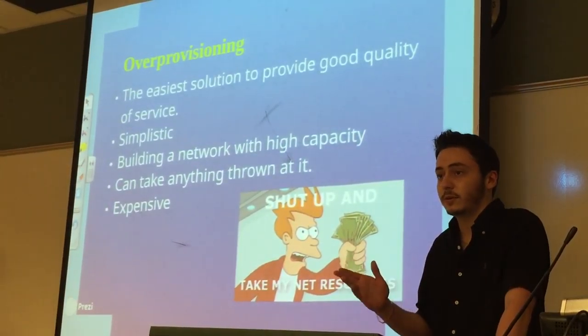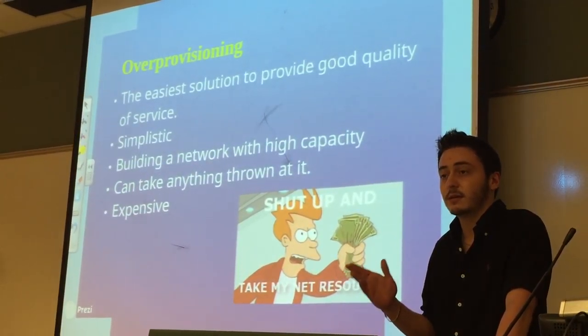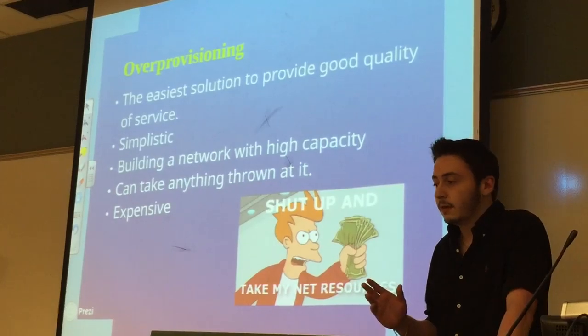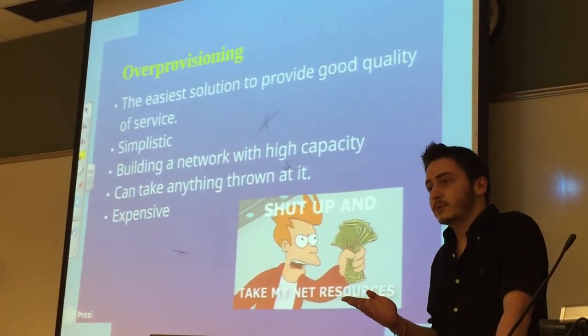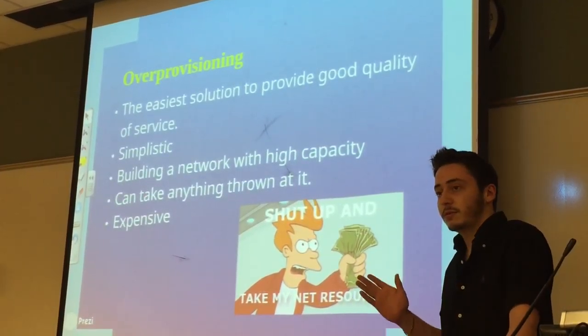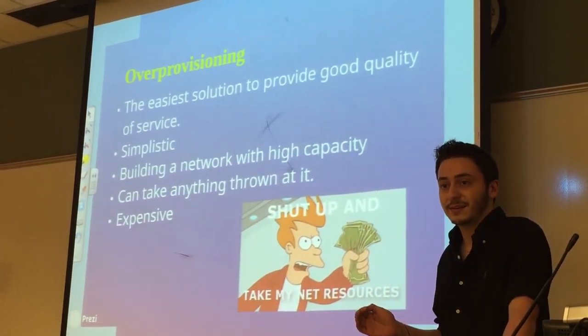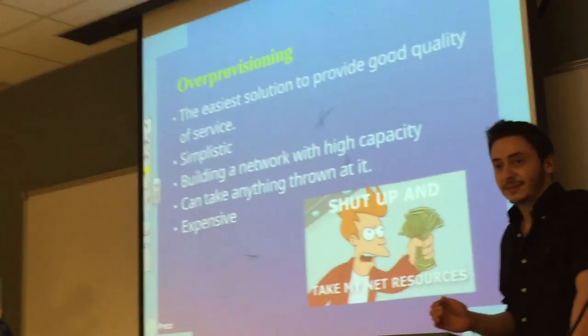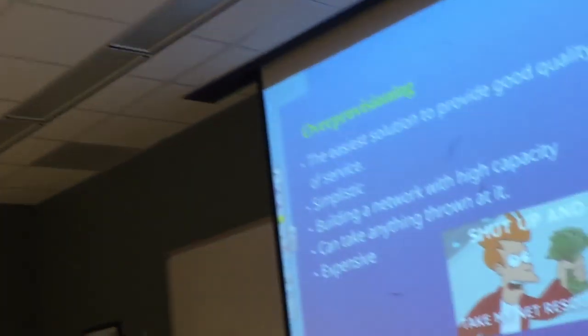So, how do we do that? What is the solution? The first one, the easiest one, is called over-provisioning. Basically, it's just build the strongest network you possibly can that can just take anything. There's no sort of optimization — it's just build it as best as you can and hopefully you'll just be able to take whatever you throw at it. But that obviously comes with its own problems, as you can imagine.